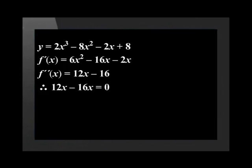Therefore, 12x minus 16 equals zero. 12x equals 16. Therefore, x equals 16 over 12, which simplifies to 4 over 3.